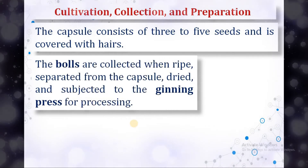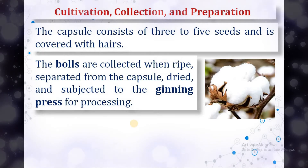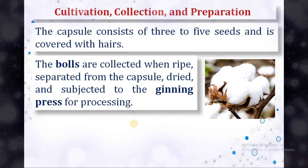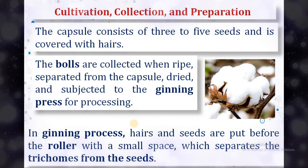The bolls are collected when ripe, separated from the capsule, dried, and subjected to the ginning press for processing. In the ginning process, hairs and seeds are put before a roller with a small space which separates the trichomes from the seed.